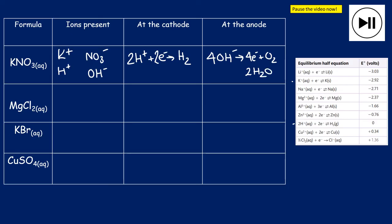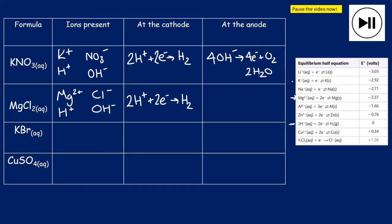For aqueous magnesium chloride: cations are Mg²⁺ and H⁺. Magnesium is above hydrogen on the electrochemical series, so hydrogen gains electrons more easily — hydrogen gas is discharged at the cathode: 2H⁺ + 2e⁻ → H₂. The anions are Cl⁻ and OH⁻; chloride is in Group 7, so the halogen is discharged: 2Cl⁻ → Cl₂ + 2e⁻.